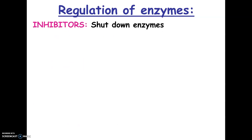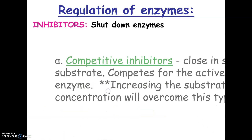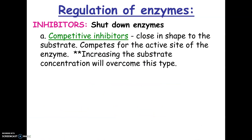There are two types of what are called inhibitors. Inhibitors are things that shut enzymes down — they stop the activity of the enzyme, but not necessarily destroy the enzyme. They just stop its activity, at least temporarily. The first type is called a competitive inhibitor. A competitive inhibitor is when something competes with the substrate for the active site of the enzyme.